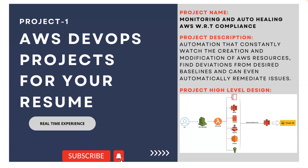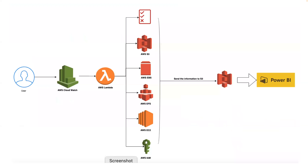This project can automatically remediate issues. In short, it can be called AWS Guardrails, or more descriptively: monitoring and auto-healing AWS with respect to compliance. This is the architecture of the project — a high-level design drawn with draw.io. This project can be enhanced further as per your convenience, but this covers the basic services needed.